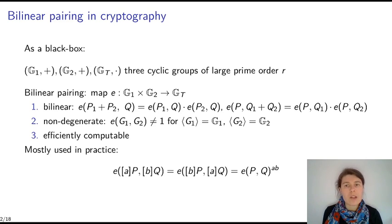three cyclic groups of large prime order R. So it's a bilinear map from G1 times G2 into Gt. It is bilinear on the left and on the right like a scalar product. It is non-degenerate and it should be efficiently computable.